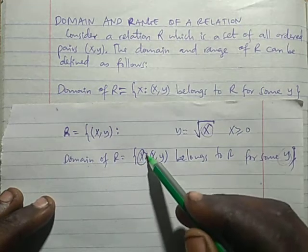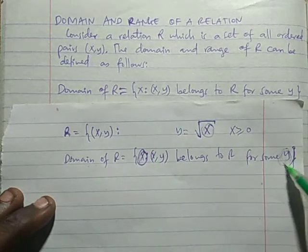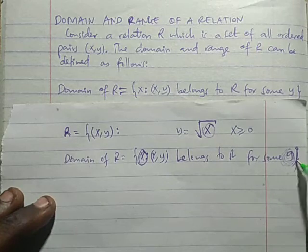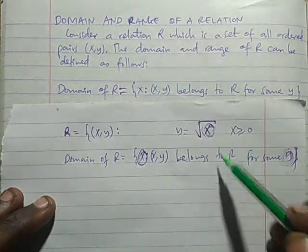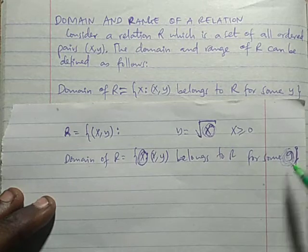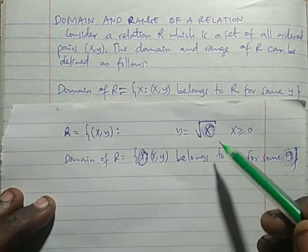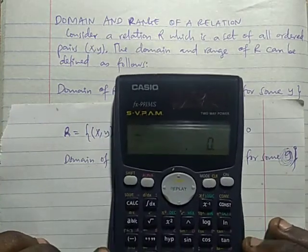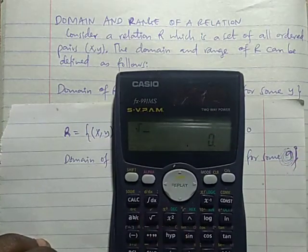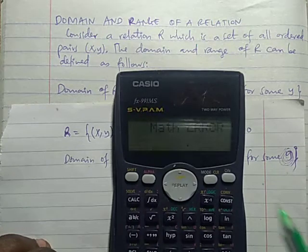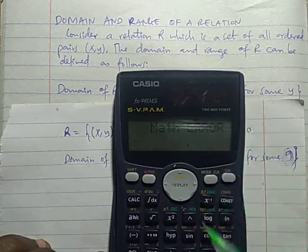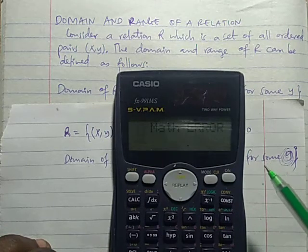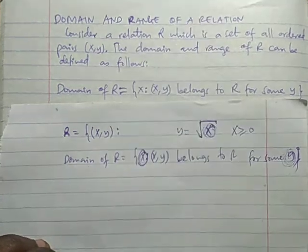Domain itakuwa ni values za X ambazo Y anaweza kutokea. Kwa sababu kuna values za X ambazo Y hatokei — kama ukiingiza X negative number, even a calculator itakwambia math error. I have my scientific calculator here: if you enter square root of negative 2, it gives a math error. So even a calculator does not recognize the square root of a negative number.